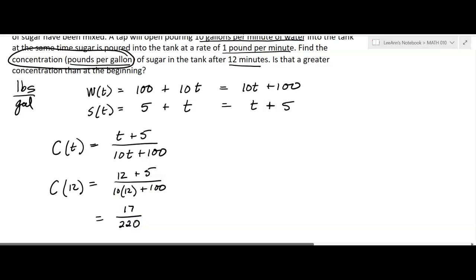That's going to be the concentration. Now let's go ahead and get a decimal approximation for that. So on a calculator, I'm taking 17 and dividing it by 220. It's approximately 0.077 pounds per gallon. And so that's what it is after 12 minutes.